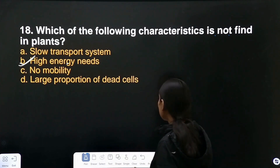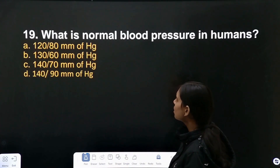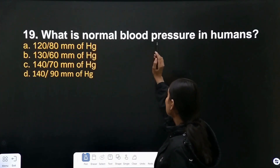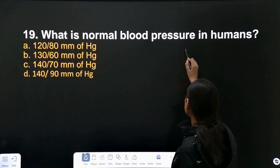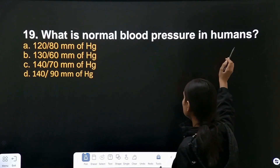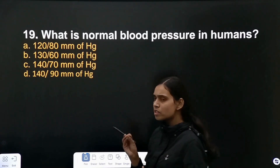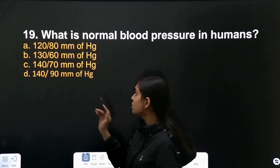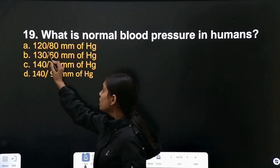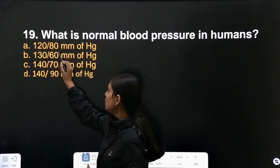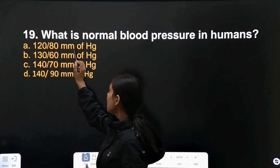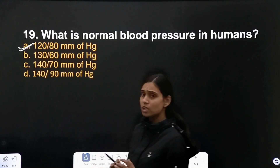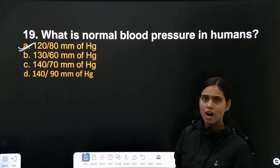Question number 19: what is the normal blood pressure in humans? The answer is 120/80 mmHg. This is the correct answer.